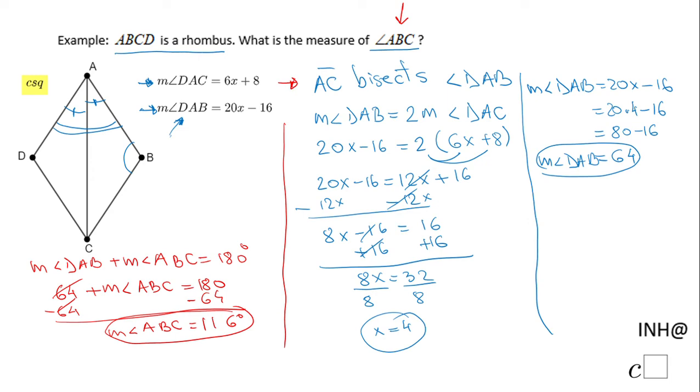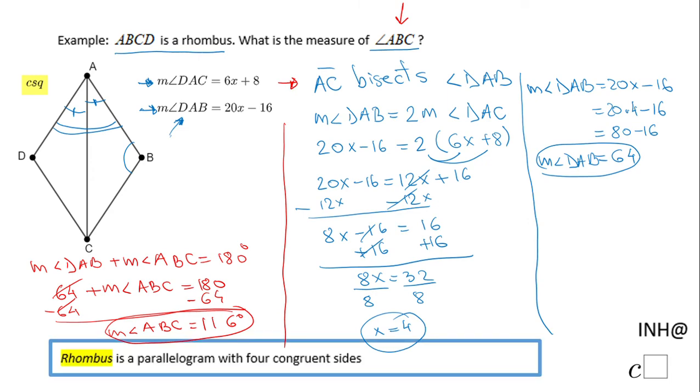In case you do not remember this property that AC bisects angle DAB, at least remember that the rhombus is a parallelogram with four congruent sides. These sides are congruent, so that means we have this triangle here, DAC, and this triangle here, BAC. They are congruent; both of them are isosceles, and all these angles, the base angles of these isosceles triangles, are going to be equal. This is another way to do the problem.